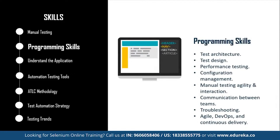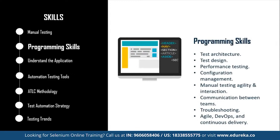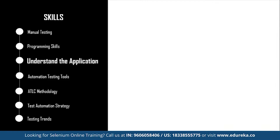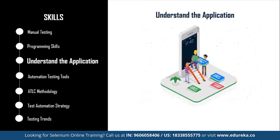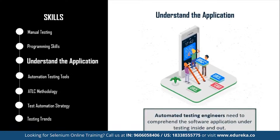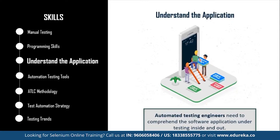The third step is to understand the application. Common details every automation tester needs to know include which programming languages were used to develop the application, what platform it is built on, which databases are involved, whether there are any web services or APIs connected to different parts of the system, and many more such questions. These points may vary based on the complexity of the application, so make sure you are completely thorough with the application you are going to test.